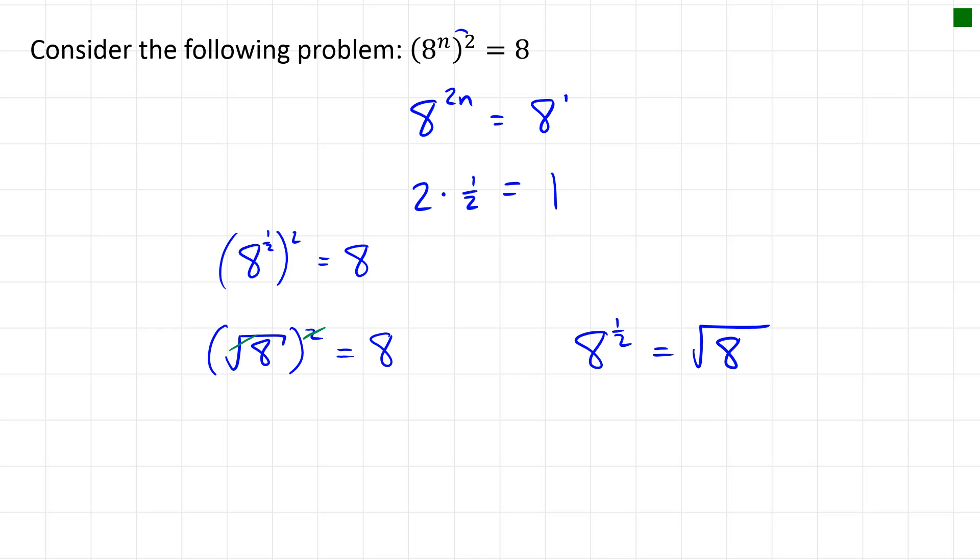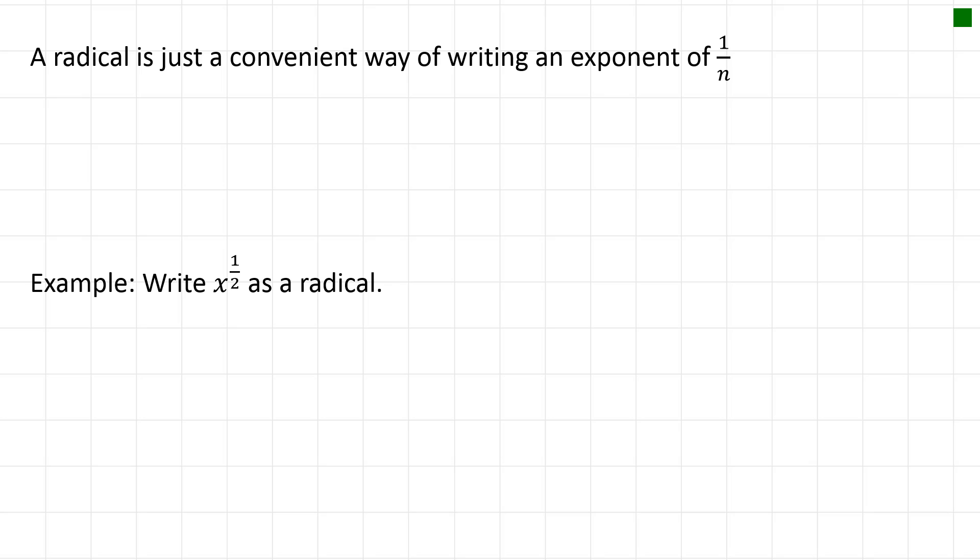So all this work with roots is actually just a way of writing these rational exponents, or exponents with fractions. A radical is just a convenient way of writing an exponent of a fraction like 1 over n. So if you have x to the power of 1 over n, that's the same as the nth root of x.